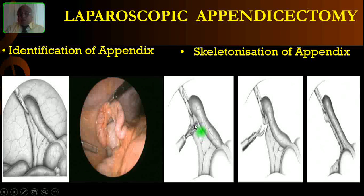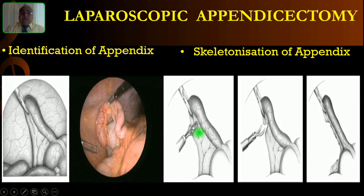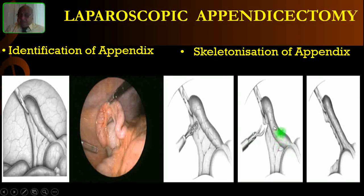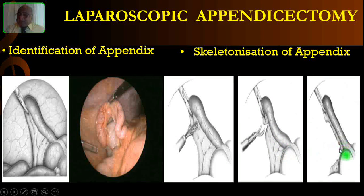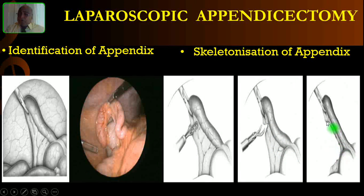When you are doing electro-desiccation, bubbles will come. Once the bubbles stop, that means it is completely coagulated. Then you can cut that coagulated area. You have to cut the meso-appendix and slowly skeletonize the appendix — cut bit by bit up to the base of the appendix, clearing the whole meso-appendix.